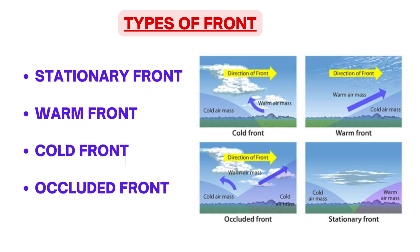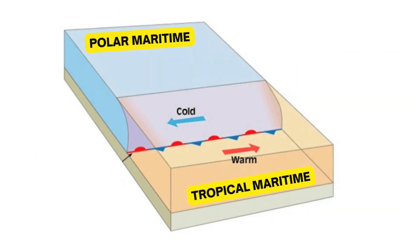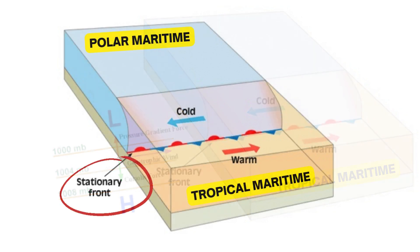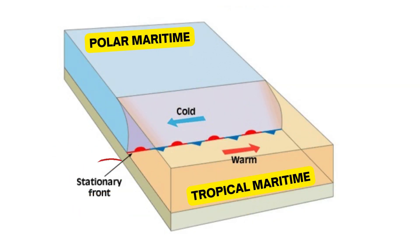Let us understand them one by one with the help of a scenario where two armies named Tropical Maritime and Polar Maritime are deployed on the border — here by army we mean air masses. Tropical maritime air mass would be warm as compared to Polar Maritime air mass. Presently there is peace between them, so they are maintaining their boundaries and no one is trying to penetrate into each other. This situation is possible when winds do not drive them into each other, when there is geostrophic wind blowing parallel to isobars and parallel to the boundary between the air masses. But still this is a front — a point where these two air masses are touching each other. This type of front would be called a stationary front. As the name suggests, air masses are stationary with respect to each other and no intrusion is happening from any side.